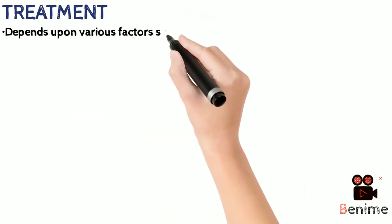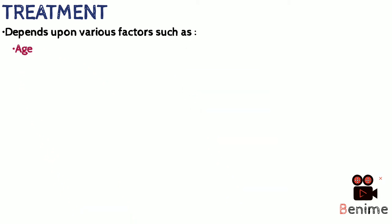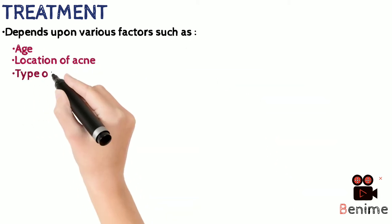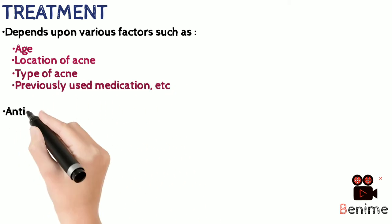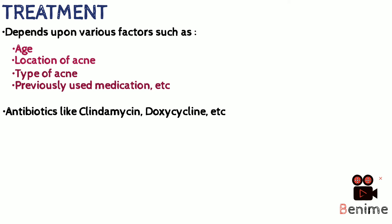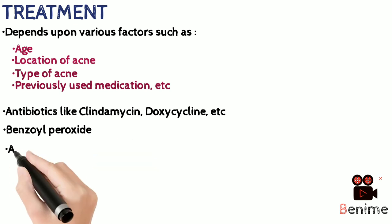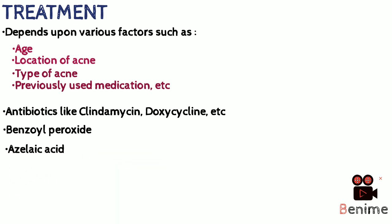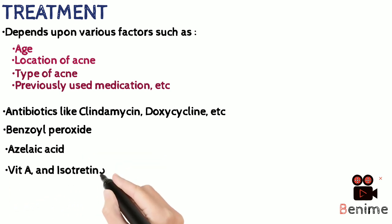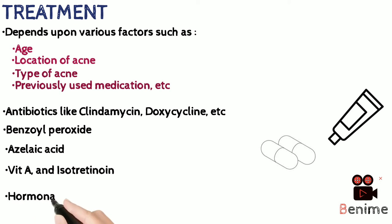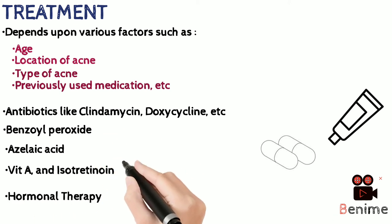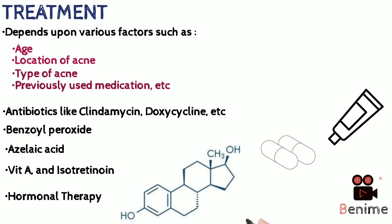The treatment of acne depends upon various factors such as the age of the person, location of acne, type of acne, and previously used medications. A course of antibiotics is often prescribed, which may include clindamycin and doxycycline, along with ointments containing chemicals like benzoyl peroxide and azelaic acid, pills or topical ointments for vitamin A and its derivatives like isotretinoin, and hormonal therapy especially in females who suffer from hormonal imbalance.